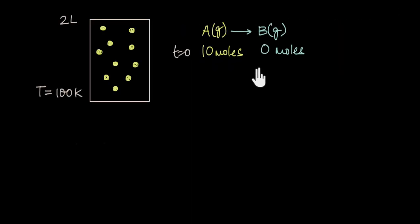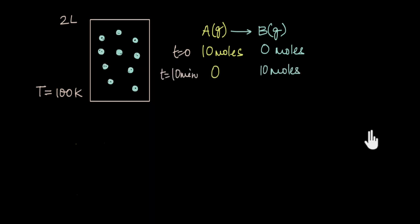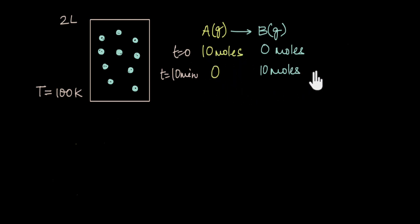Let us take a few examples. Consider a hypothetical reaction in which gas A converts into gas B. Initially at time t = 0, we have 10 moles of A. After 10 minutes, all of A gets converted into B. In this reaction, 1 mole of A gives 1 mole of B, so 10 moles of A on complete reaction in 10 minutes gives 10 moles of B. How do we calculate the rate of this reaction?